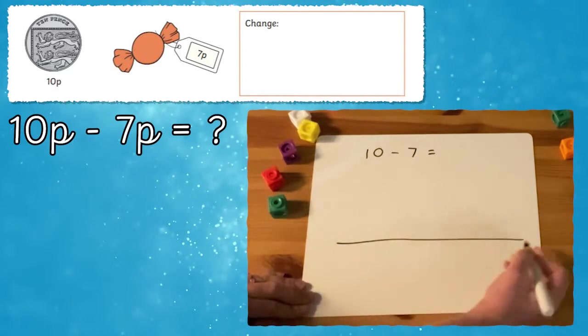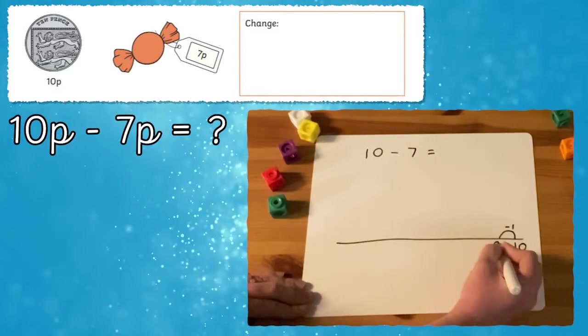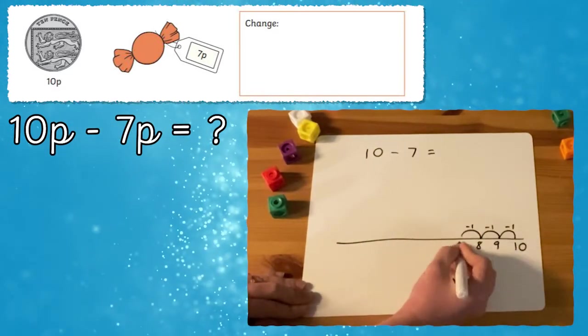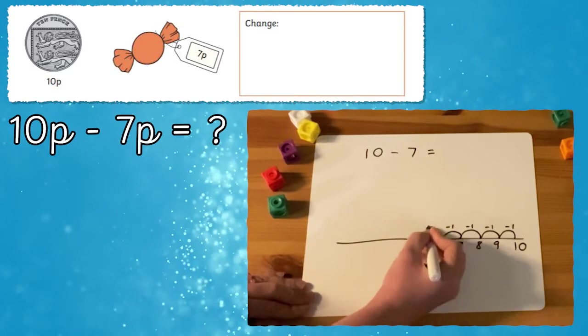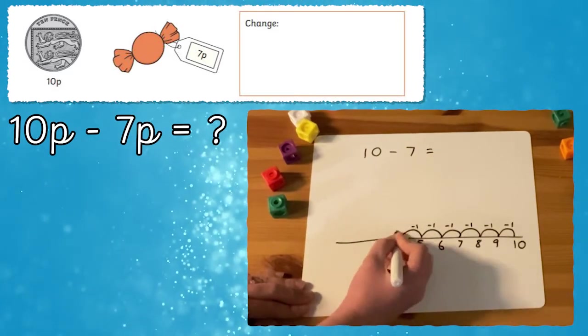Or why not use a number line to solve this problem. I'm starting on 10 pence and counting back 7 pence in jumps of 1. And I land on 3 pence.